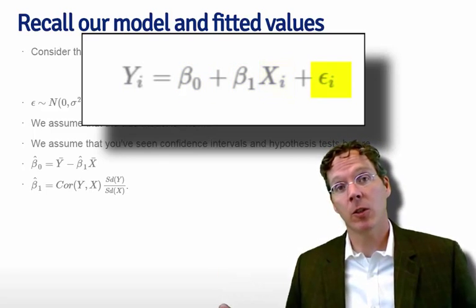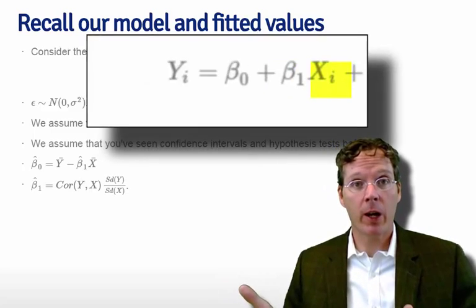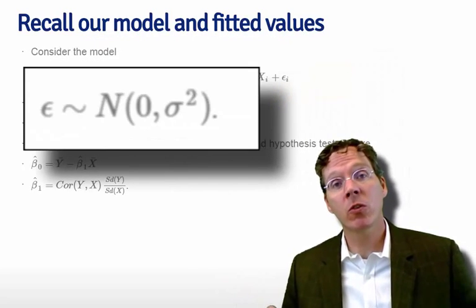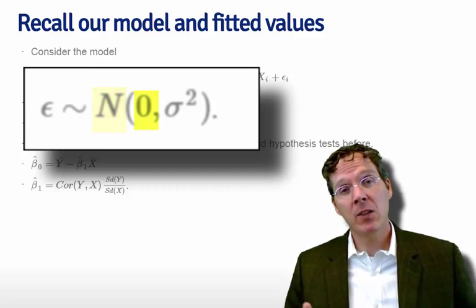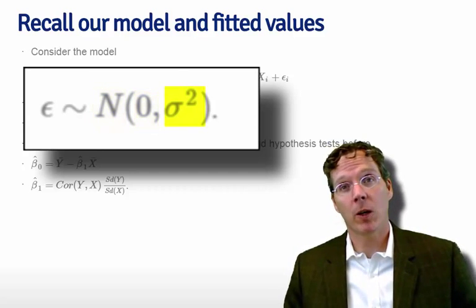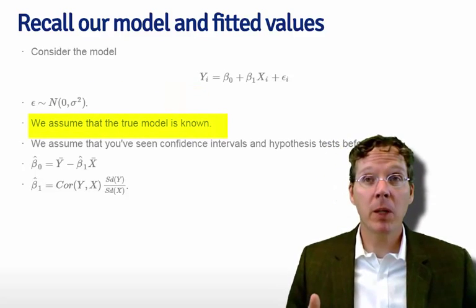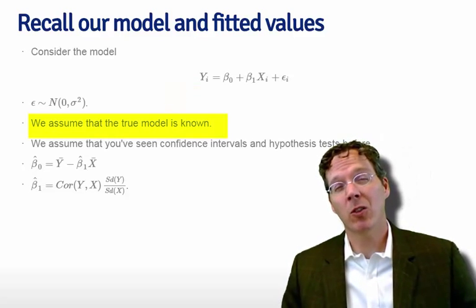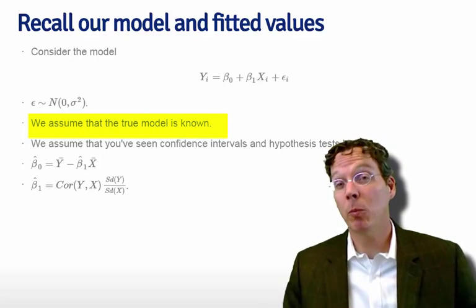plus an error term. The error term, epsilon i, is what we're labeling it. We're going to assume is normally distributed, mean zero, with a variance sigma squared. For the time being, we're going to assume that the true model is known, and this will be the basis for most of this class.